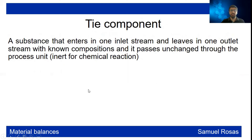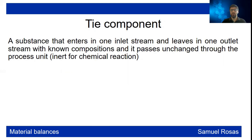Another very useful concept is the tie component — a substance that enters in one inlet and leaves in one outlet, where you know the compositions. It passes through the process unit; in a chemical reaction context it could be an inert gas.